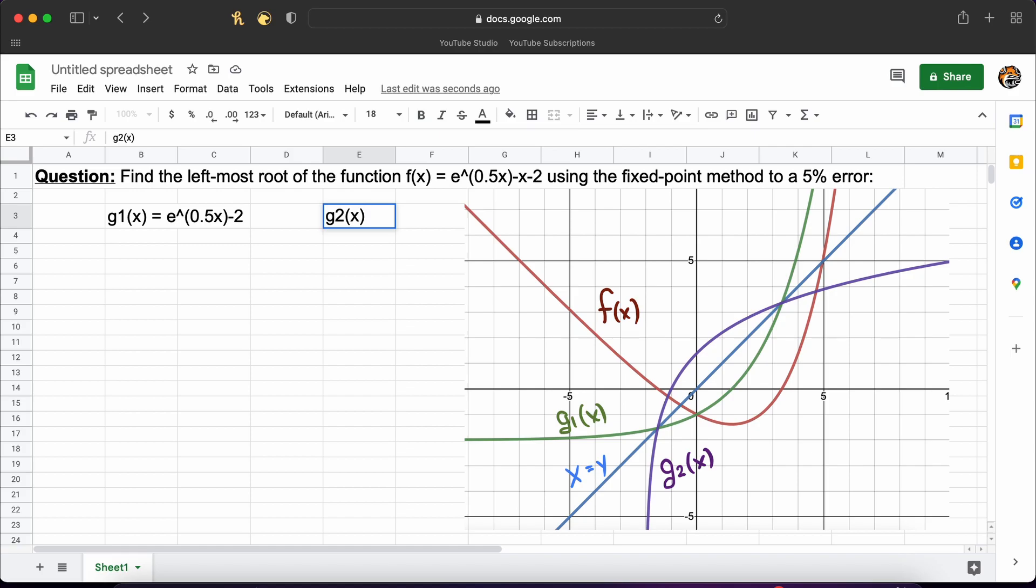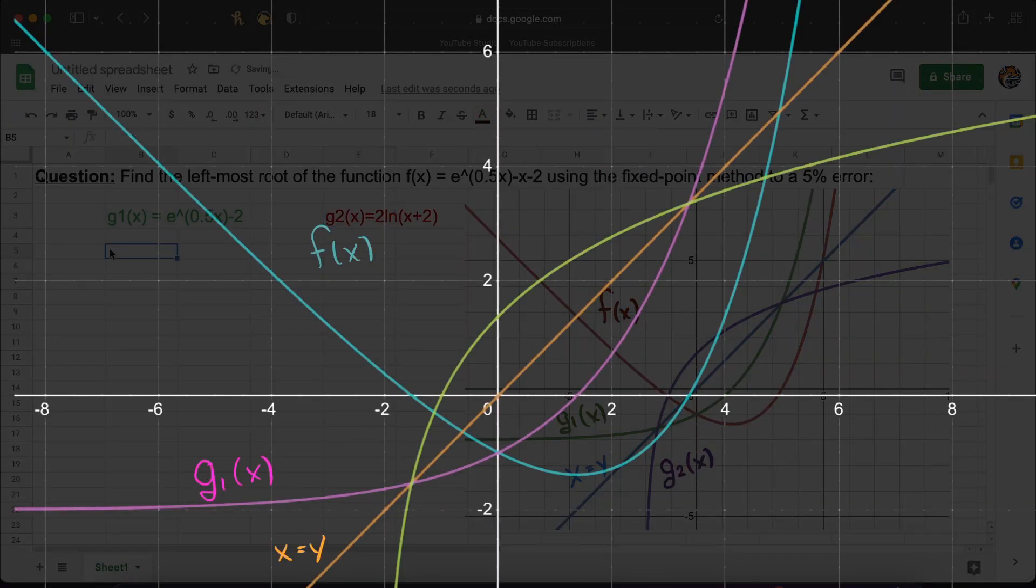However, as I mentioned in our fixed point method convergence video, if the slope of the tangent is greater than 1 in absolute terms at our root of interest, then the fixed point iteration method will never converge for that g. Examining our graph it is clear that at g2, the slope is rather intense around x root. Therefore, convergence with g is impossible.